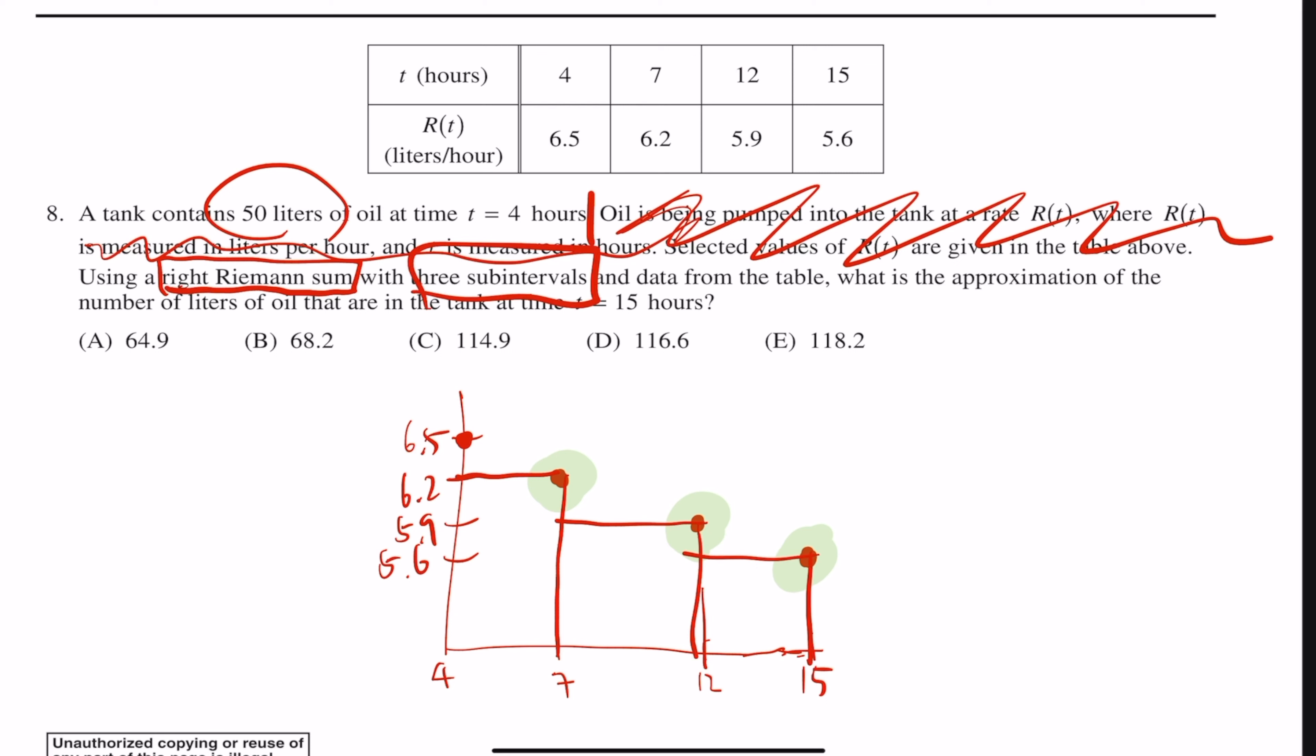So basically, if you look at these rectangles, that is actually 3 by 6.2, so multiply by that, the area of the rectangle should be 18.6, and then this is 5 by 5.9. So multiply by that, you get 29.5. And then that should be 3 by 5.6. So when you multiply by that, you should get 16.8.